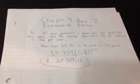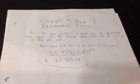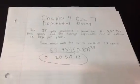Okay, so I'm going to answer a question from Chapter 4, Quiz 7. Quiz 7 is called Exponential Decay.